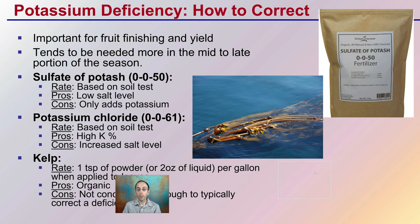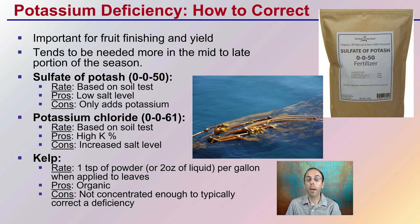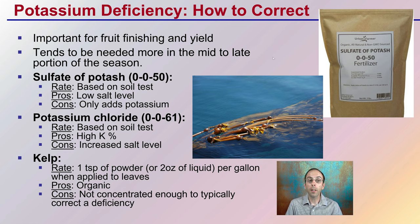How to prevent or correct a potential deficiency if you notice it: keep in mind that potassium is important for fruit finishing and end yield, so you might see a deficiency a little later in the season, past flower and fruit set. It tends to be needed more in mid to late season. Sulfate of potash, 0-0-50, is 50% potassium — typically applied based on a soil test. It has a very low salt level and only adds potassium, making it a great product, especially if you can add it to the soil before the plants go in the ground.